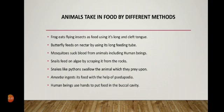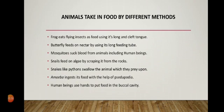Snakes are flesh eaters; they eat animals like rats. A python, for example, swallows its prey whole. The eagle is a large bird that feeds on the flesh of its prey by tearing it with its powerful hooked beak. Amoeba is a tiny aquatic unicellular animal that ingests food with the help of pseudopodia — meaning false feet. Human beings use their hands to put food into the buccal cavity.